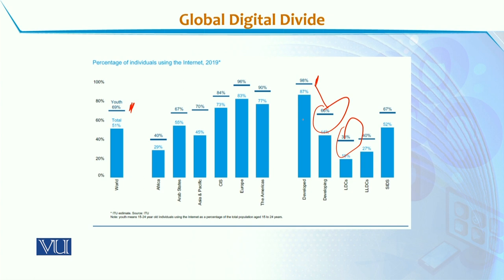This tells us clearly that if there is no access, then how will usage and effective utilization happen? Access is the main significant factor whenever we talk about the usage and implications of the internet.